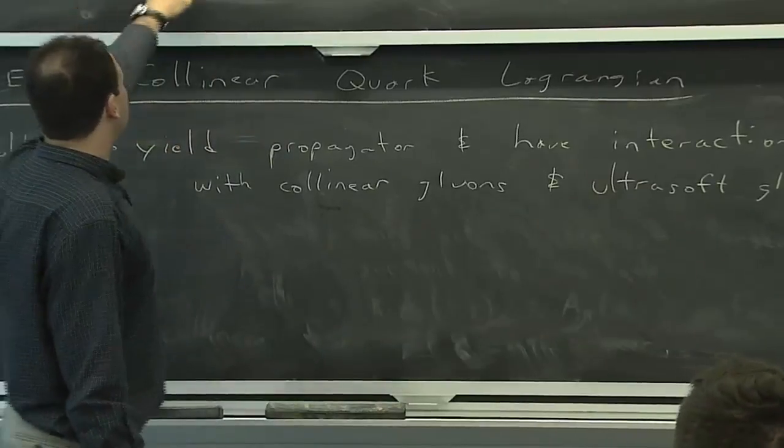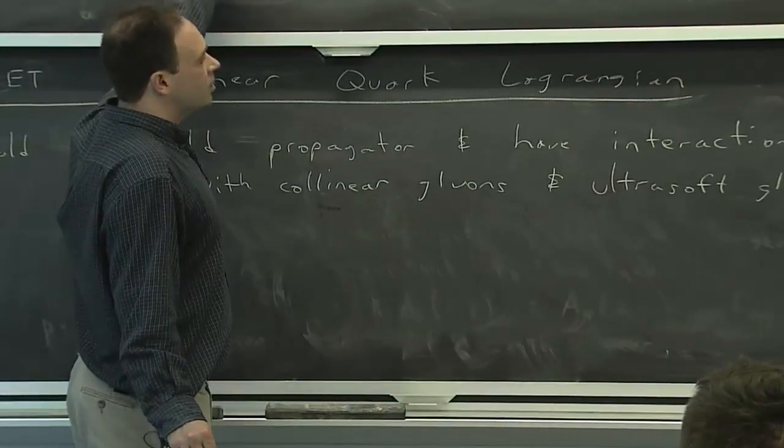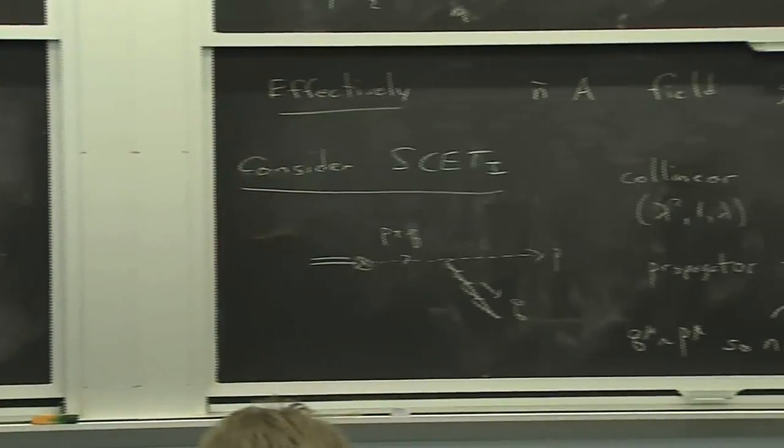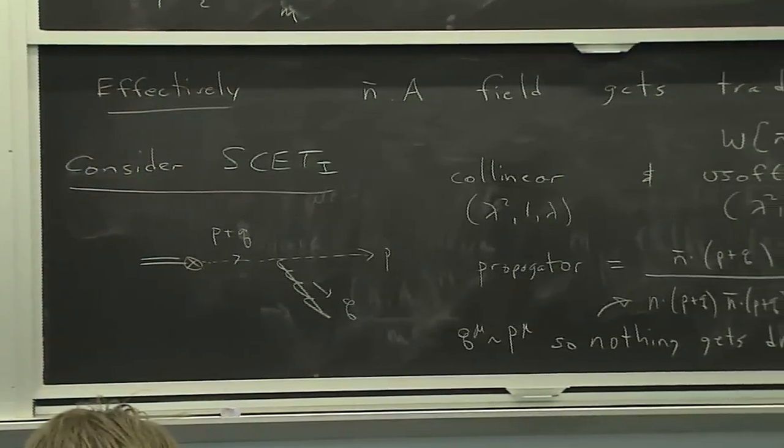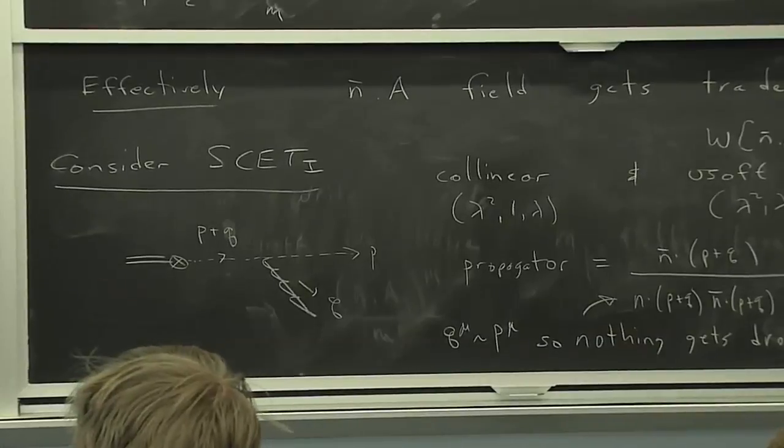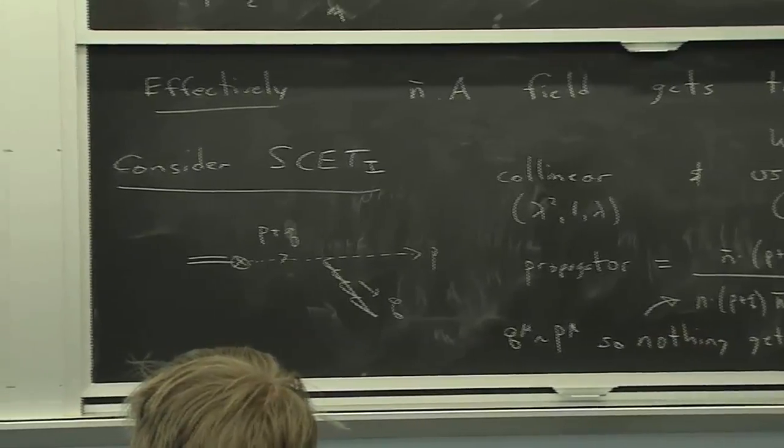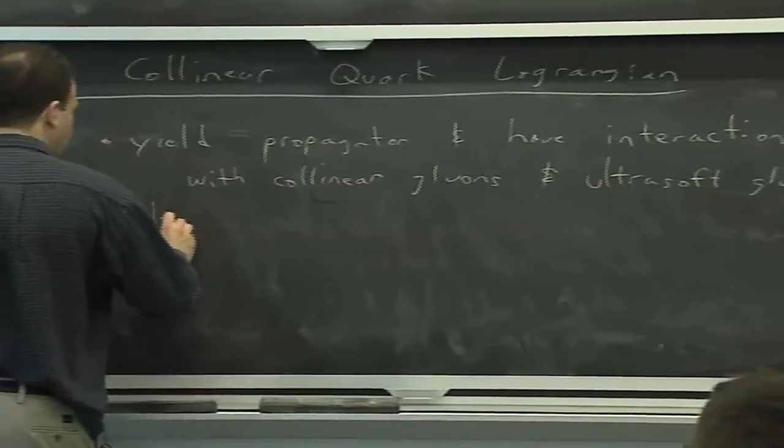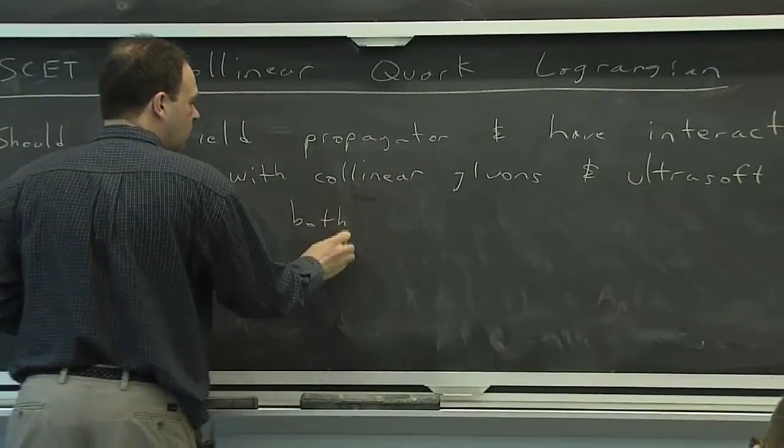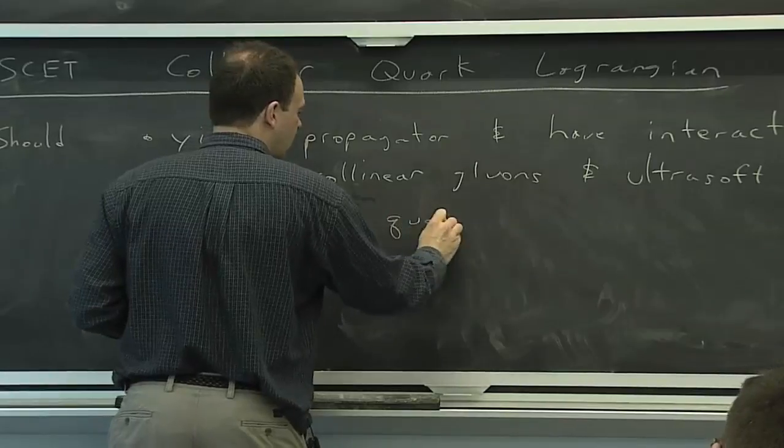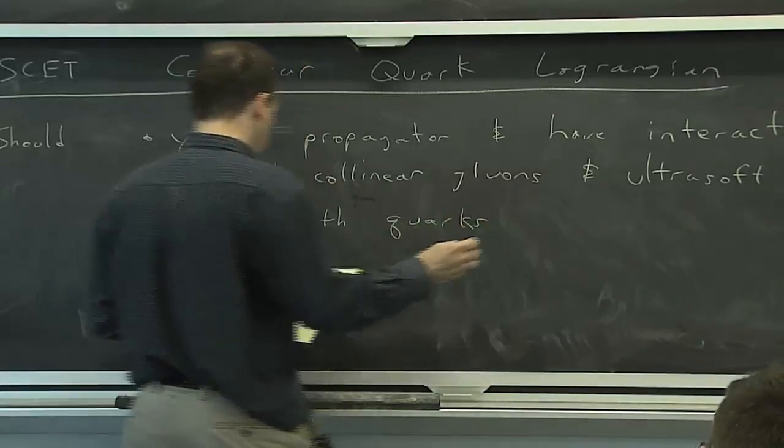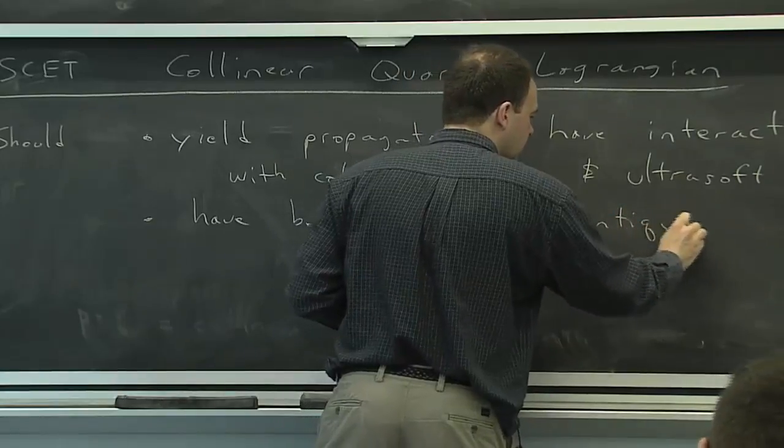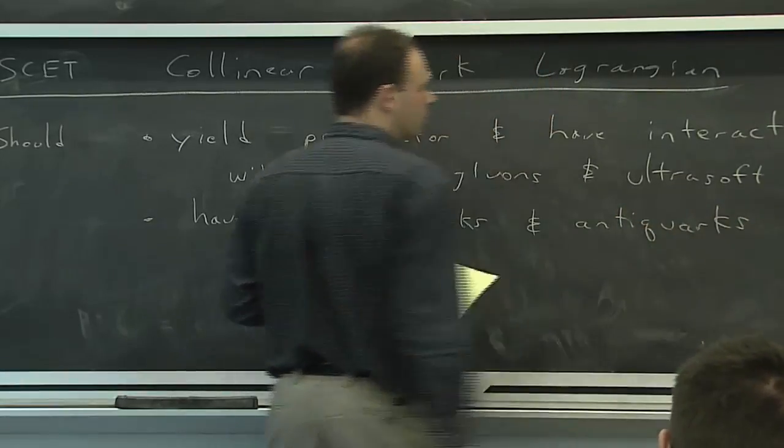Or put another way, the external field here has a different power counting than the external field here. So already, we're kind of seeing that we need two different gluon fields in this effective theory, as we said earlier. So the Lagrangian has to have interactions with both of them. It has to have both quarks and antiquarks, because remember that collinear quarks and collinear antiquarks both existed as leading-order things. It's not like HQET, where one of them gets integrated out.